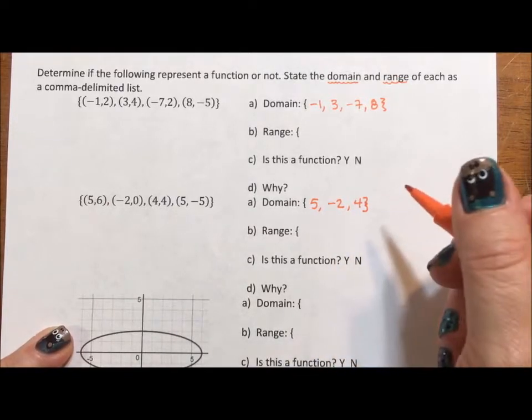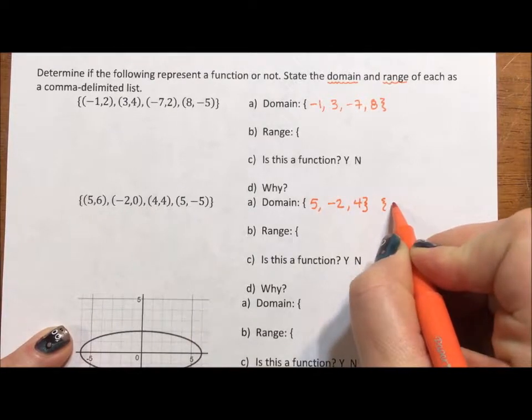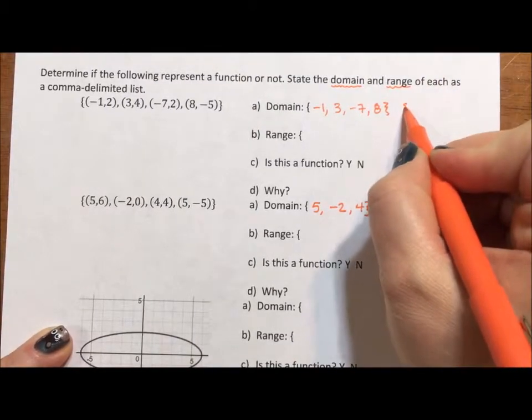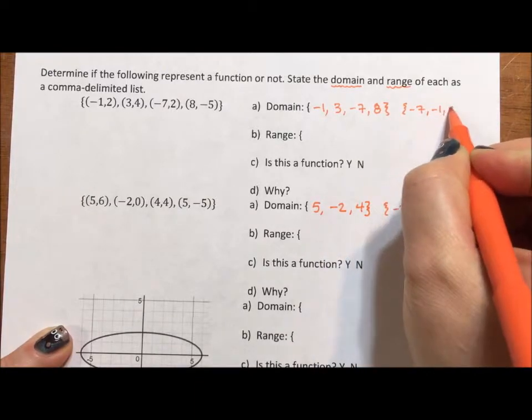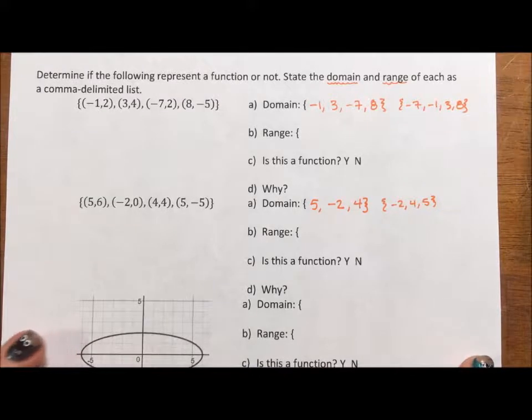Now you're saying, well, should we write them in order? And my answer is, sure, if you want to. You're more than welcome to change this to negative 2, 4, 5. You're more than welcome to change this to negative 7, negative 1, 3, 8. You don't have to though. There's nothing that says that set notation has to be smallest to largest. A number line does, but set notation doesn't.